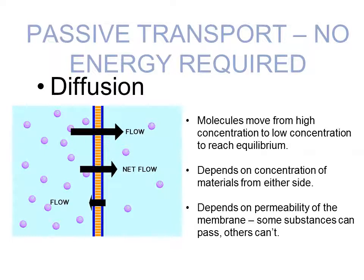They are also flowing in the other direction — see the area at the bottom. However, the net flow, or the overall movement, is still in the direction of high to low concentration. Molecules move from high concentration to low concentration to reach what we call equilibrium, which means the concentration is equal on both sides. This depends on the concentration of the materials from either side and the permeability of the membrane. Some substances can impact the membrane and others cannot, so that will affect how the movement works.